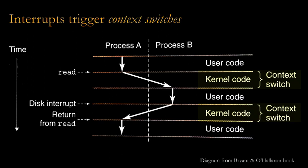This picture shows what can happen with interrupts — both software interrupts and hardware interrupts. Process A runs for a while, then calls the read system call, which triggers a software interrupt causing the kernel to run. The kernel runs briefly and may schedule a different process next, because the read system call requires a disk operation. Since the disk IO won't be done immediately, process A is blocked or sleeping, so it's not possible to schedule process A to run again.